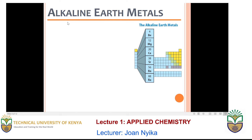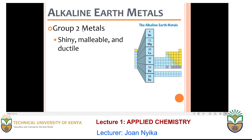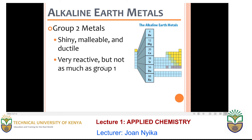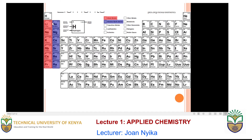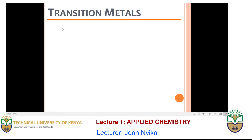The second group, group two, are the alkaline earth metals. They include beryllium, magnesium, calcium, strontium, barium, and radium. Just like the group one metals, they are ductile, malleable, and shiny. They are very reactive but not as much as group one metals. They have a valence of two electrons, meaning they must give up their two electrons for a chemical reaction to occur. These are labeled in purple on the periodic table.